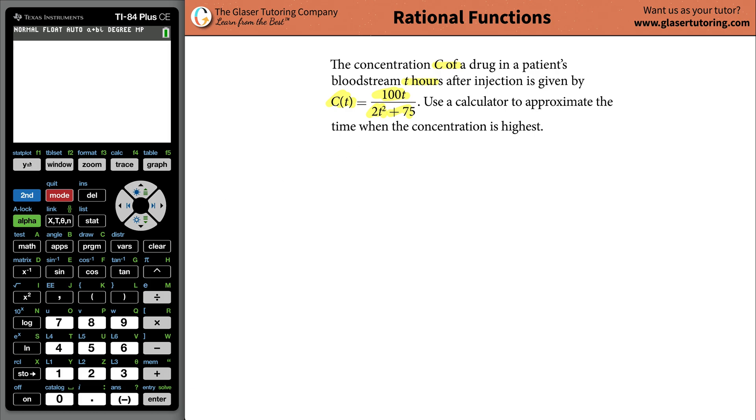So we go to our calculator and we're going to plug in the function. We do 100T, in this case it's just X, divided by, make sure you use parentheses down here in the denominator because you have to make sure that the entire denominator is being divided into the numerator. That's why you need the parentheses when you plug it into the calculator. So you're going to do 2X squared and then plus your 75.